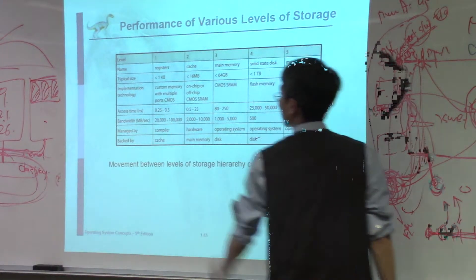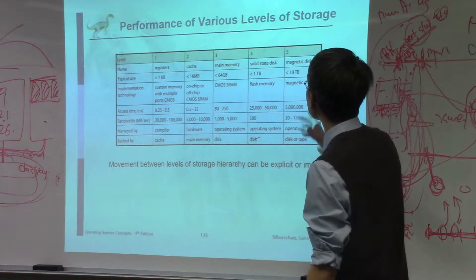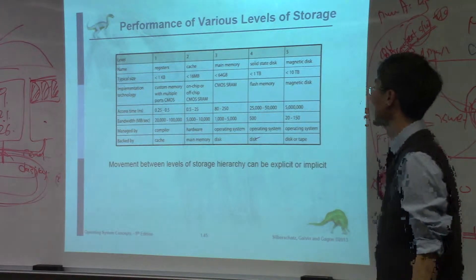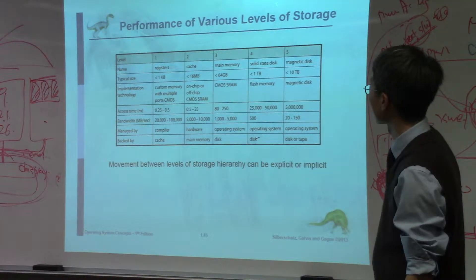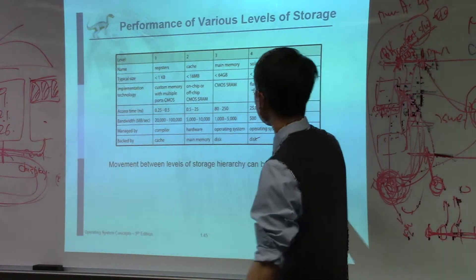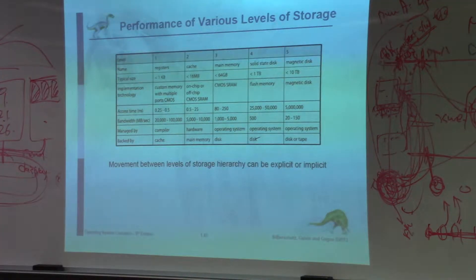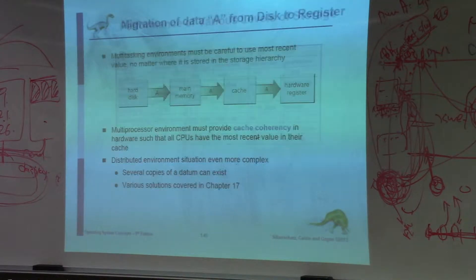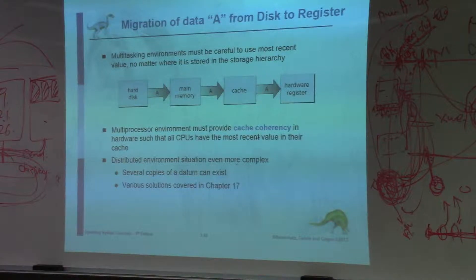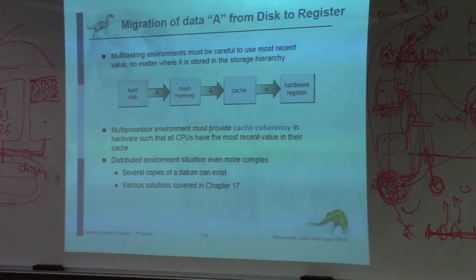It's even less than a nanosecond for registers. But magnetic tape access time is definitely in the range of fractions of a second. From the hardware side, data will be transferred up through the hierarchy to the register. Finally, you can access the data from the register.